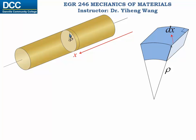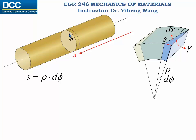Before deformation, this angle here can be considered to be a 90 degree angle. After deformation, the front plane has twisted to the left relative to the back plane. Now this radial line has moved to the left by a small angle d phi, and this angle has changed from 90 degrees. We know that this angle change from the original 90 degree angle is the shear strain gamma. If we look at this small length of arc S, we realize it can be evaluated both by rho times d phi, as well as dx times gamma.